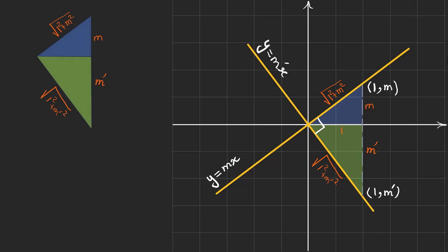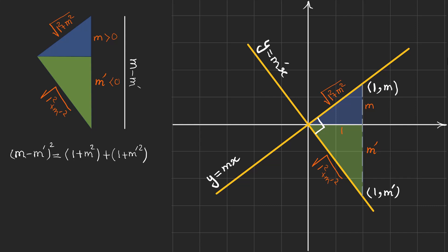Now let's take a look at the bigger right triangle. You can see that M is a positive number and M' is a negative number because it's below the x-axis. So if I want to find this length, I can write it as M minus M', because M' is negative and M minus M' is something positive. So again, we use the Pythagorean theorem for the big right triangle. If I expand it, I can see that we are left with just minus 2MM' equals 2.